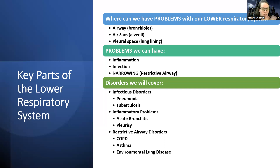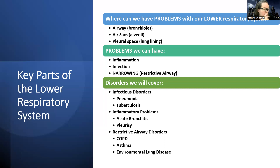We have infectious disorders — we're going to talk about the big four. There are two restrictive airway disorders and two infectious disorders that are the biggest around the NCLEX and our exams: pneumonia and tuberculosis as infections, and COPD and asthma for restrictive airway. We're also going to talk about some other diseases including atelectasis, acute bronchitis, pleurisy, environmental lung disease, pleural effusion, and thoracentesis.